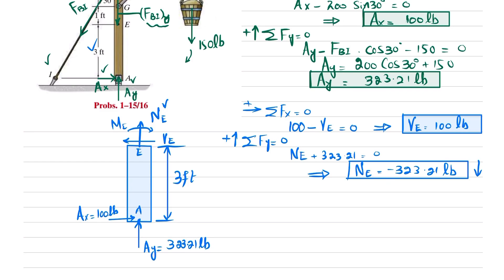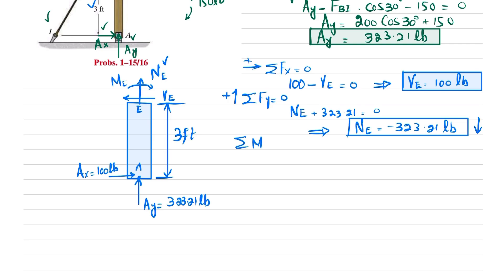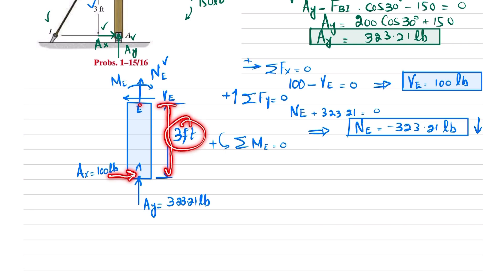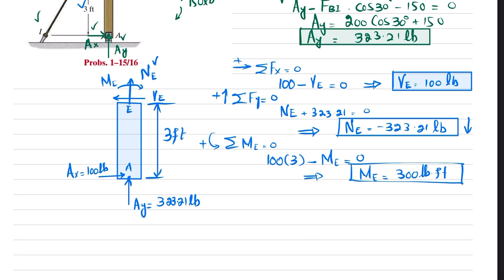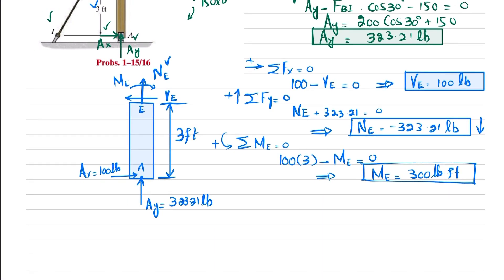Applying the third equilibrium condition: sum of all moments about point E equals zero, taking counterclockwise as positive. Me is clockwise so it is negative. The force Ax of 100 pounds times a perpendicular distance of three feet produces a counterclockwise moment, so it is positive. Therefore, 100 times 3 minus Me equals zero, giving Me equals 300 pound-feet. The positive result confirms our assumed clockwise direction for Me is correct.